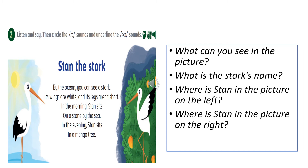Now look at the picture. What can you see? Perfect — there is a stork. What is the stork's name? Let's read the lesson: Stan the stork by the ocean. You can see a stork; its wings are white and its legs aren't short. Its name is Stan. In the picture on the left, Stan is by the sea.